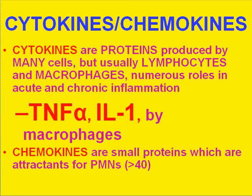TNF-alpha and interleukin-1 are both produced by macrophages. The reason I mention these is that not only do they have a direct role in the inflammatory processes we described, but they are also controllers of other cytokines as well. So when you have a long list of cytokines involved in any process, you'll always find TNF-alpha and interleukin-1 at the top of the list.